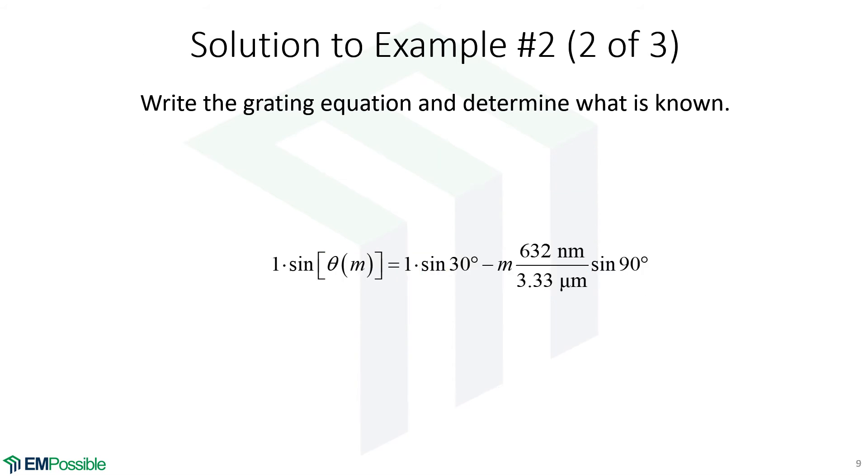So we put in all the numbers, and we end up here. So we can simplify that down so that we have a simpler grating equation. And this is really what we'll work with now. So we're going to figure out in this new equation what values of m will give us angles that have a real value. We'll count all those values of m, and that's the number of diffraction orders.